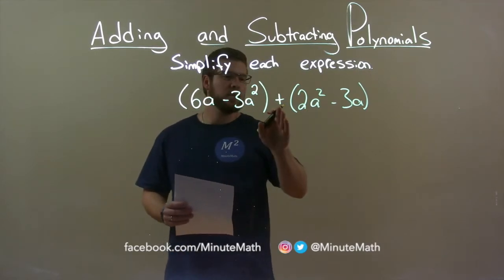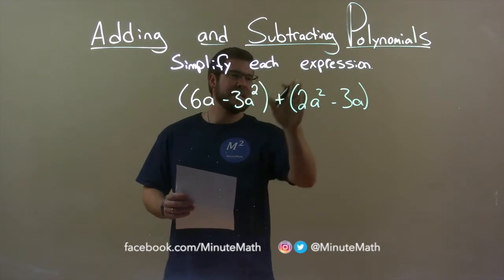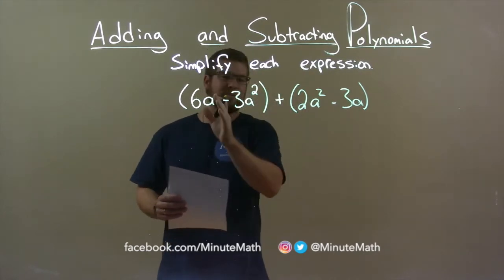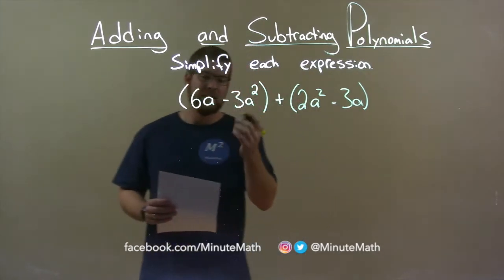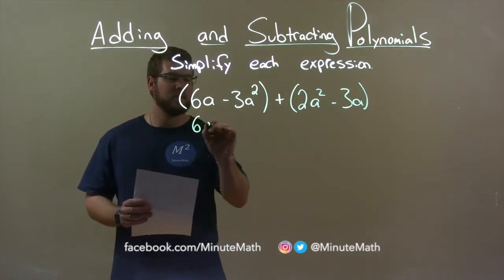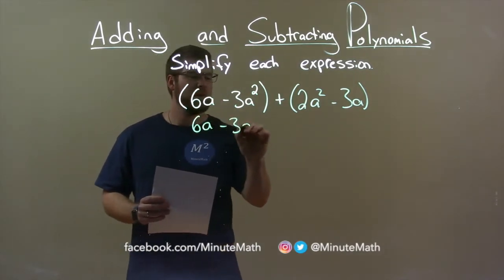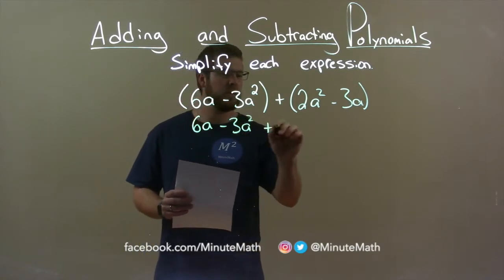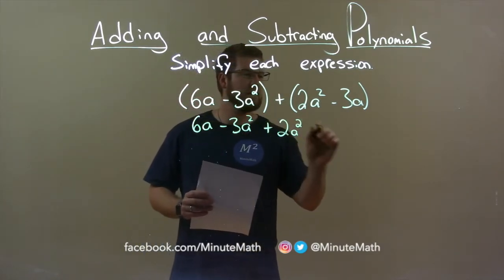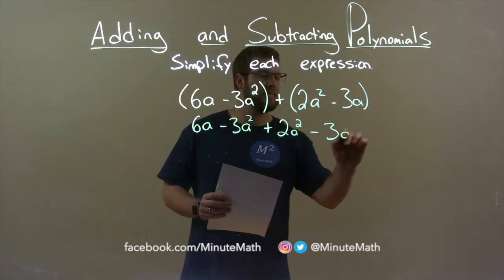Now normally we have the plus sign here, right? There's nothing really needing for these parentheses. Since there's nothing to simplify within it, we don't need them anymore. So I can rewrite this to be 6a minus 3a squared plus 2a squared minus 3a.